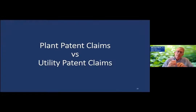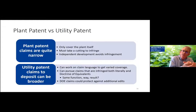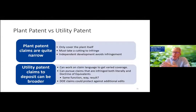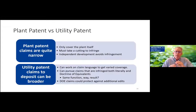A quick comment on plant patent claims versus utility patent claims: plant patent claims are quite narrow — they only cover the plant itself. You have to take a cutting in order to infringe. So if somebody else were to introduce that same mutation into a plant, a plant patent may not cover it because the coverage is very narrow. In contrast, utility patent claims can be quite broad.